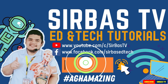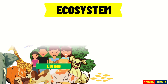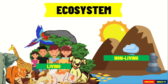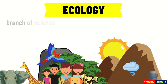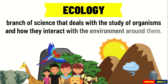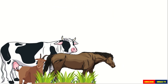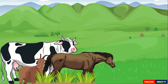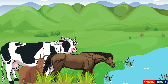An ecosystem is a community of living things interacting with its non-living environment. The branch of science that deals with the study of organisms and how they interact with the environment around them is called ecology. Organisms have basic needs such as food and shelter. However, food and shelter is not enough to support life — living organisms also need water and air to survive. Organisms are affected by the different components of an ecosystem.